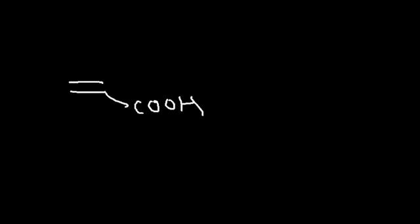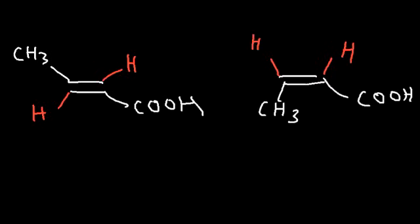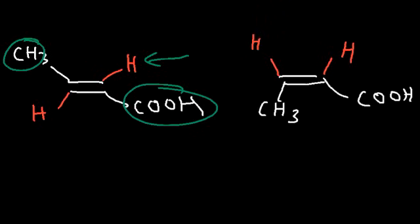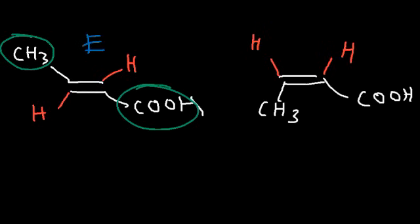What about E/Z isomers? If we have two carboxylic acids that differ in geometry, we use the E/Z system. For the example on the left, the two groups with the highest priorities are the methyl and the carboxylic acid. The carboxylic acid functional group has way more priority than hydrogen, and methyl has more priority than hydrogen on the left side. Whenever your two highest priorities are on opposite sides, you have the E isomer. Whenever they're on the same side, you have the Z isomer — so in this case, it's the Z isomer.